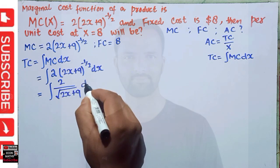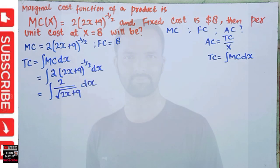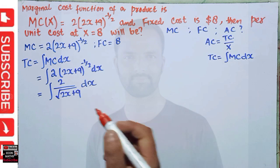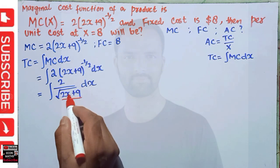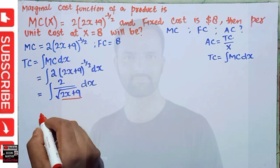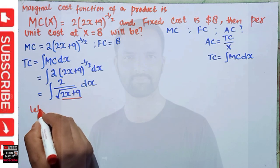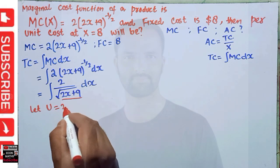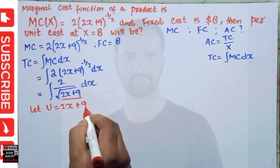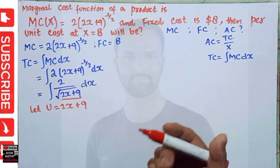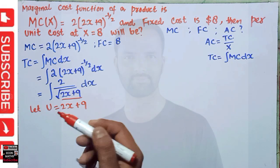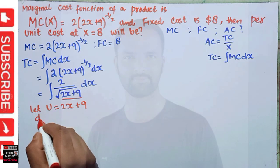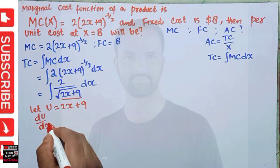Now how do we integrate this? We will use the substitution method. We put 2x + 9 equal to u. Let u = 2x + 9. I am using the substitution method of integration here.